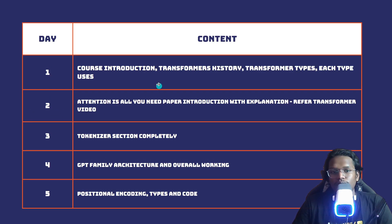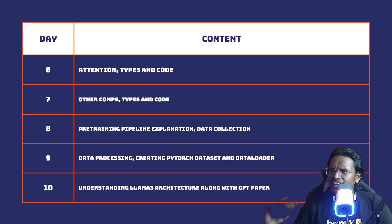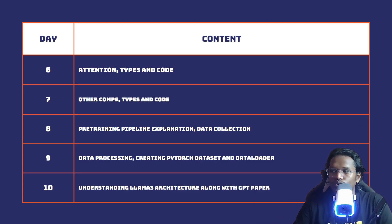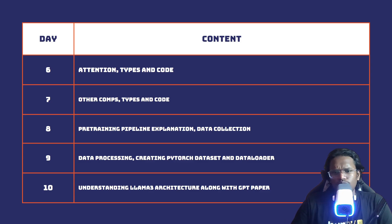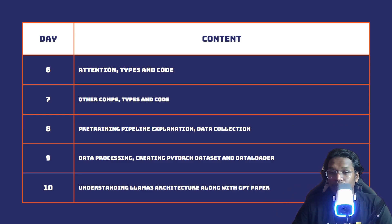By day seven you'll have an in-depth understanding of the components involved in an LLM and how an LLM works overall. Once you know your LLM, the next step is pre-training. We'll start with the pre-training pipeline explanation in the second week, following the LLaMA 3 paper, which is considered the state-of-the-art model right now.